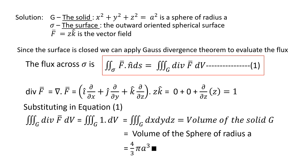Since the surface is a closed surface we can apply Gauss Divergence theorem to evaluate the flux. The flux across the surface sigma is: double integral over sigma F dot n dS = triple integral over G divergence of F dV. First, find divergence of F, that is del dot F. The formula of del is (i ∂/∂x + j ∂/∂y + k ∂/∂z) dot zk. Taking the dot product: ∂/∂x of the i-component is 0, ∂/∂y of the j-component is 0, and ∂/∂z of the k-component z is 1.